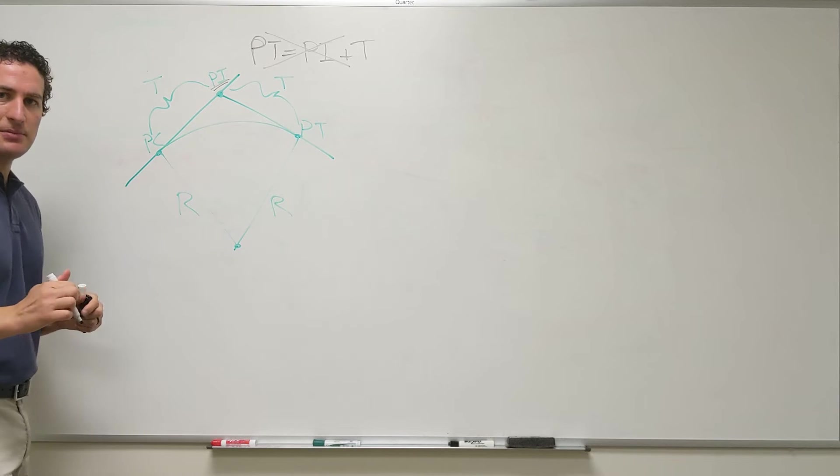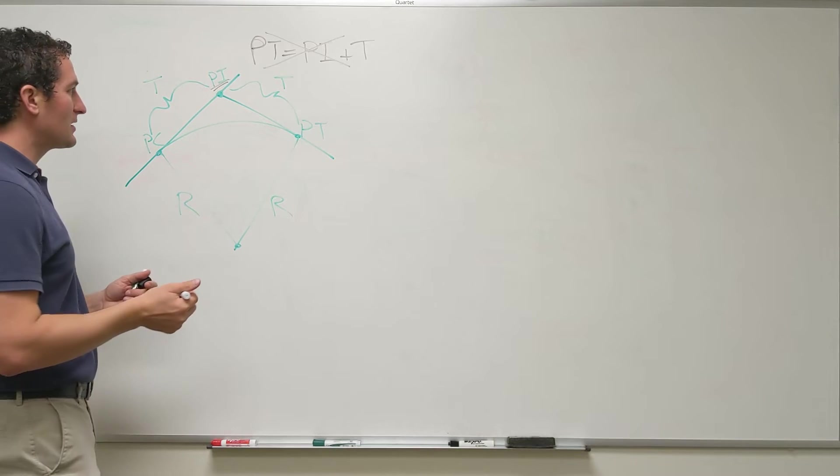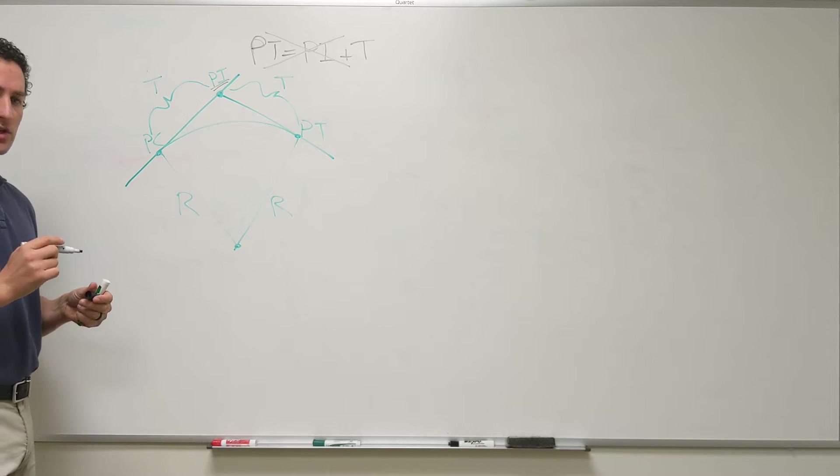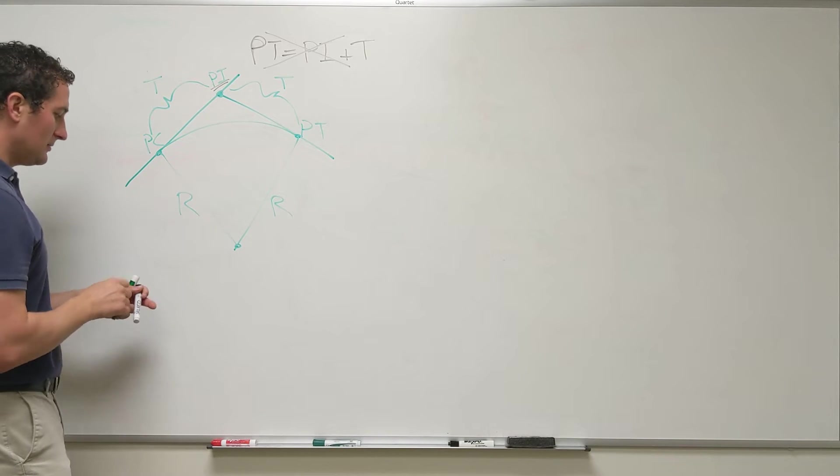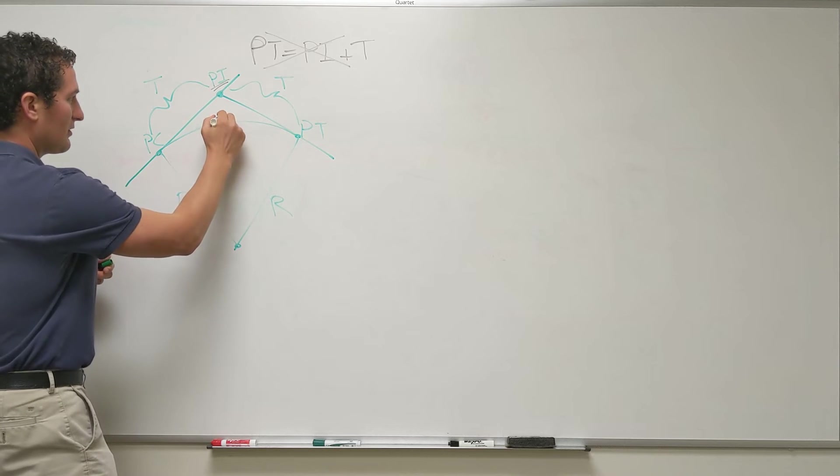Geometrically, the distance is T, but from a stationing perspective, we always want to station along the center line of the roadway. So in order to find the station of the PT, this is the length of the curve.